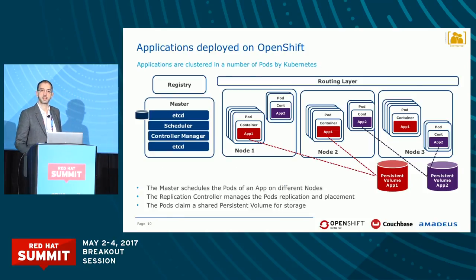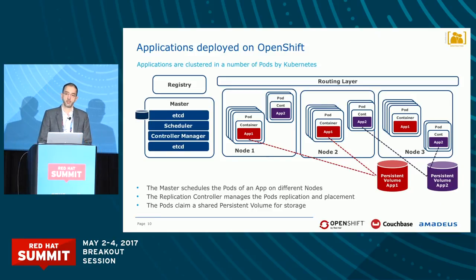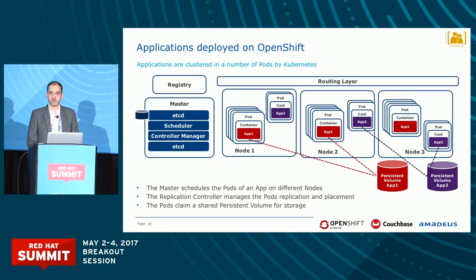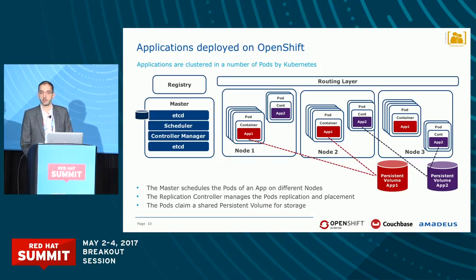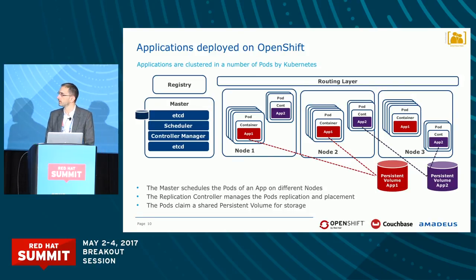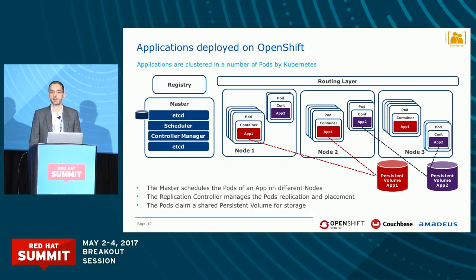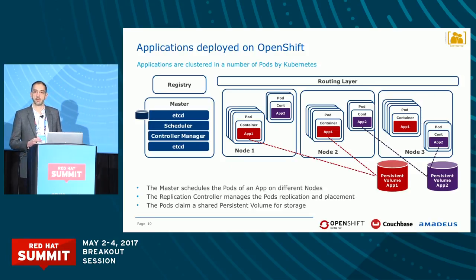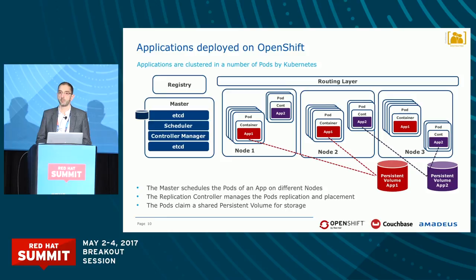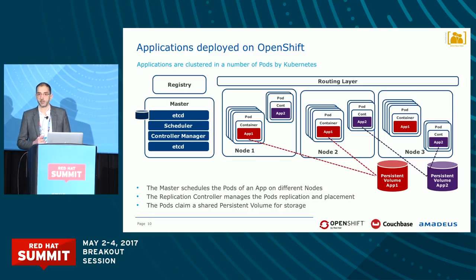As Nicola was saying, OpenShift from its origin — version 3.0 — is mainly designed to manage stateless applications. When you deploy applications on OpenShift, you deploy them into pods that are assembled and deployed by the OpenShift master, which schedules the different pods and scales them depending on the needs of the application. Whatever the type of application, you have the same model for scaling, which gives you a great advantage in terms of operability.